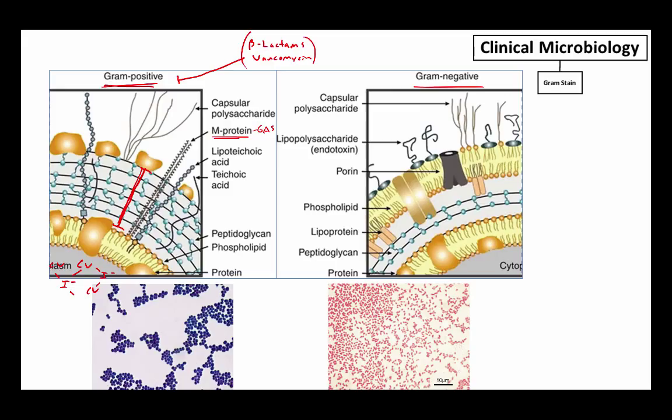The other things in here are lipoteichoic acid and teichoic acid. All that I know about these is that they add rigidity to the cell wall of bacteria containing them, and this allows those bacteria to survive in relatively harsh conditions, so bile or salt containing environments.